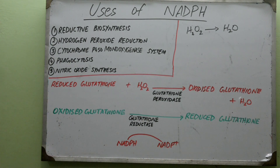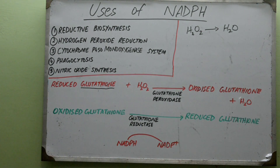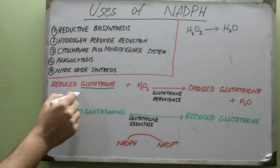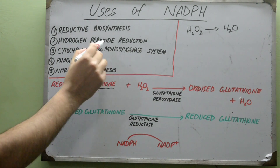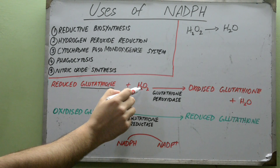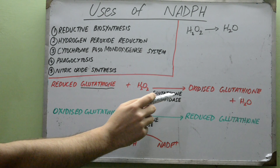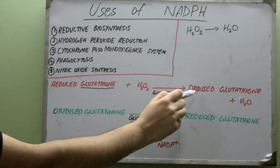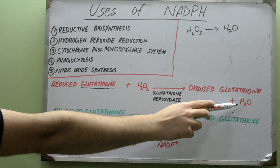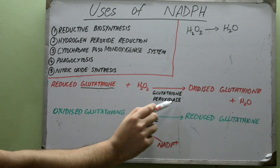H2O2 has to be reduced, and that reduction takes place via a tripeptide called glutathione. This glutathione is formed from three amino acids: glycine, glutamine, and cysteine. It has to be in a reduced form in order to reduce hydrogen peroxide. Reduced glutathione and hydrogen peroxide react with each other, ultimately producing oxidized glutathione and water. This reaction is catalyzed by glutathione peroxidase.